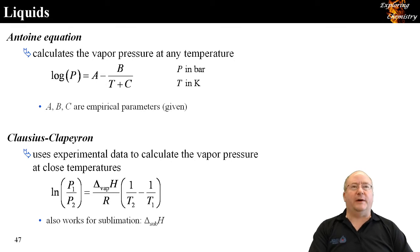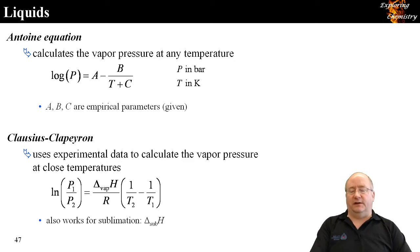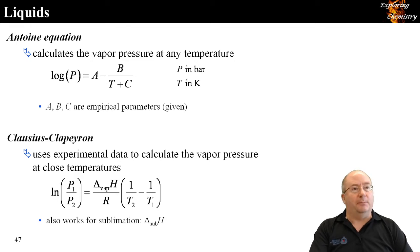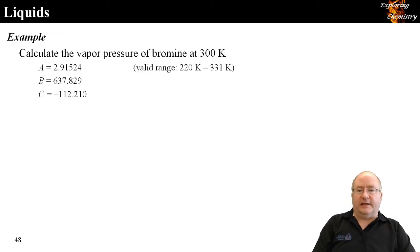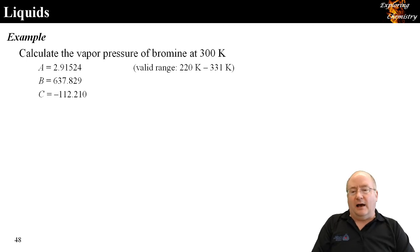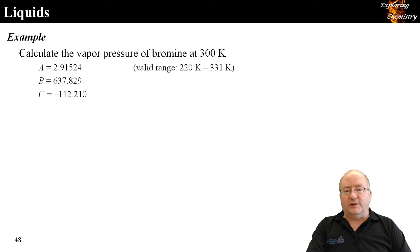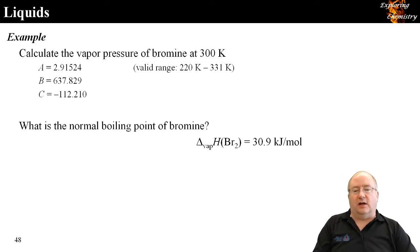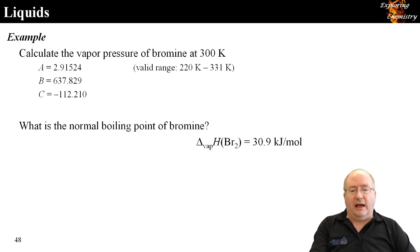If you know the vapor pressure at one temperature, you can estimate it at a nearby temperature — within plus or minus 50 degrees — using the Clausius-Clapeyron equation. For our example: calculate the vapor pressure of bromine at 300 K using Antoine parameters from the NIST Chemistry WebBook, valid from 220 to 331 K. Then use the Clausius-Clapeyron equation with the enthalpy of vaporization of bromine — 30.9 kJ/mol — to determine its normal boiling point.